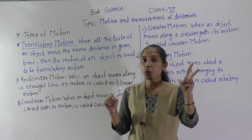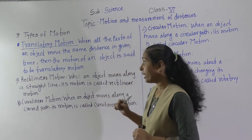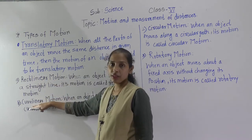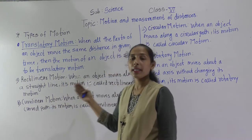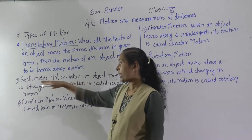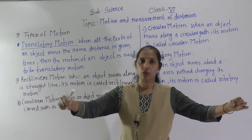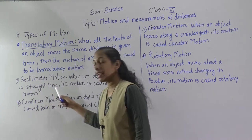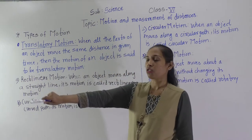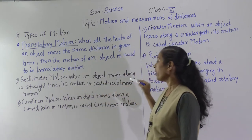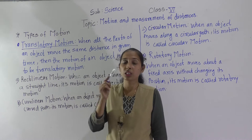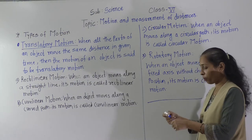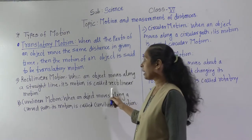Translatory motion is of two types: Rectilineal Motion and Curvilineal Motion. Rectilineal means the object is moving on a straight line. When an object moves along a straight line, its motion is called Rectilineal Motion.